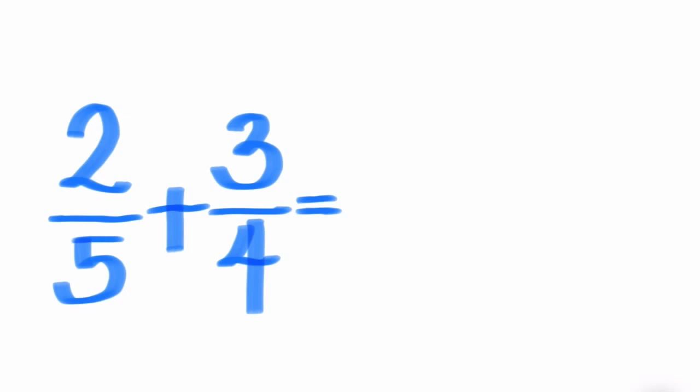Here are the steps. Step number one. Draw a wing-like structure crossing over the numerator of the first fraction and the denominator of the second fraction. Then multiply them and write the answer over the numerator of the first fraction.